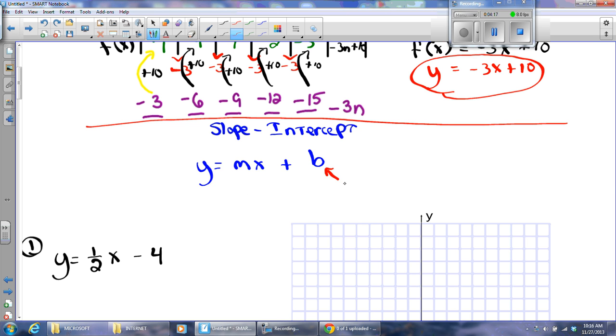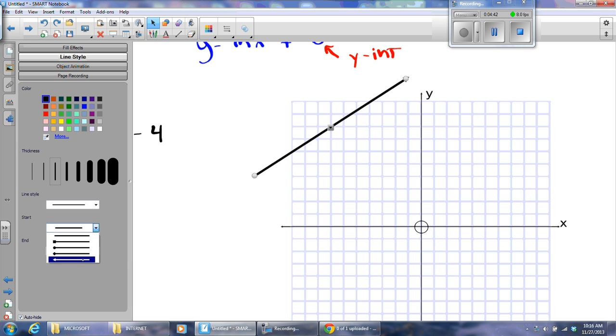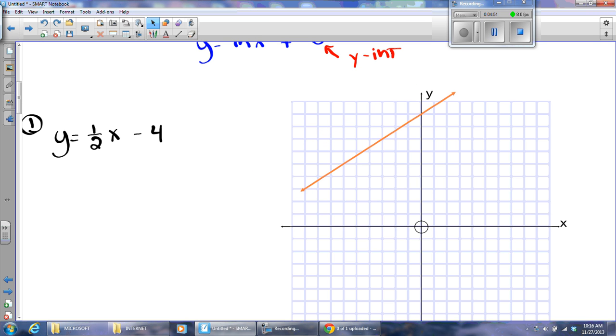I'm going to explain what everything is. First of all, this b represents what we call the y-intercept. What do you suppose a y-intercept is? Well, you see the y-axis here, this vertical line? That's the y-axis. A y-intercept would be the place on a line. Let me get an actual line here.